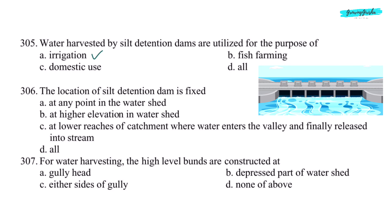Next question: the location of silt detention dams is fixed at — option A, any point in the watershed. Next question: for water harvesting, high-level bunds are constructed at — option A, gully head.